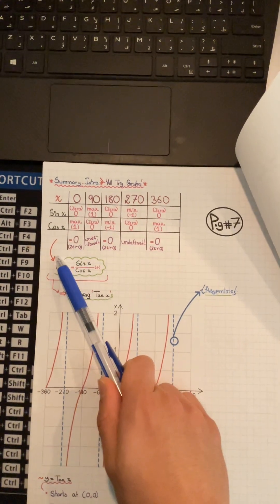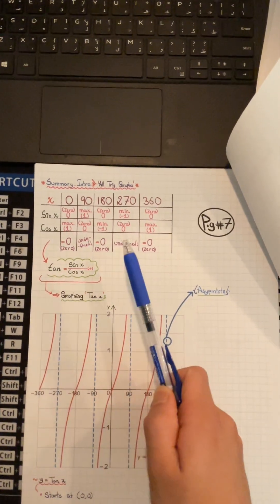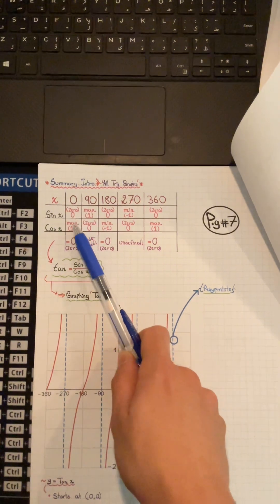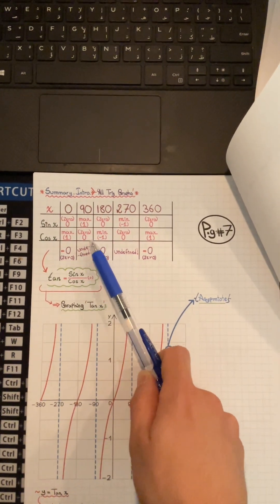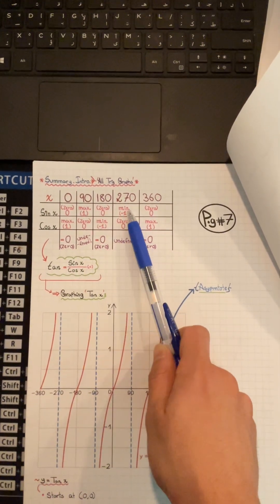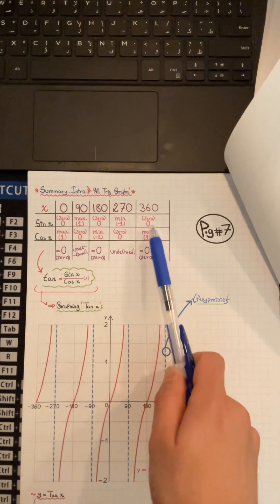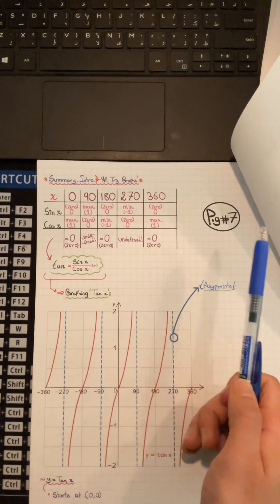Tan is sin x over cos x. So at 0° it's 0 over 1, which equals 0. At 90° it's 1 over 0, which is undefined. At 180° it's 0 over 1, which is 0. At 270° it's 1 over 0, undefined. At 360° it's 0 over 1, which is 0. And that is your tan x.